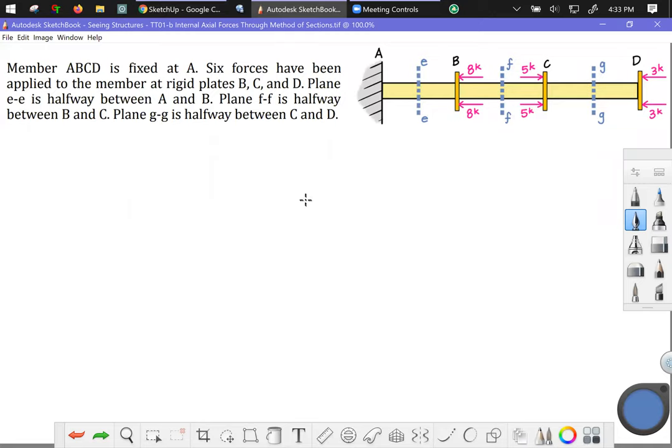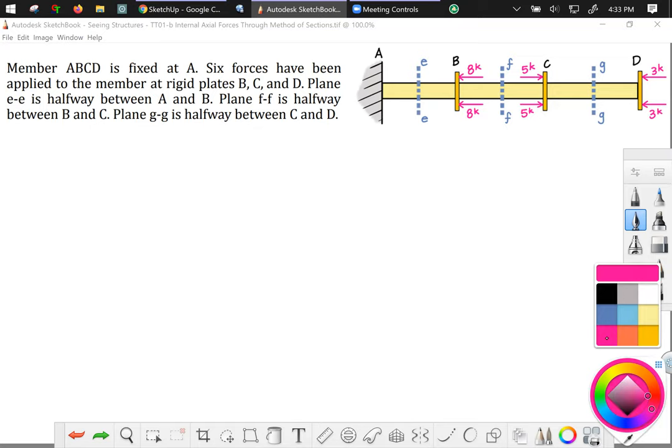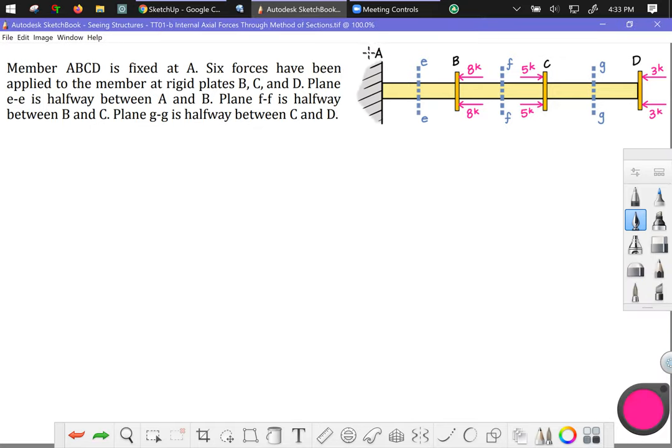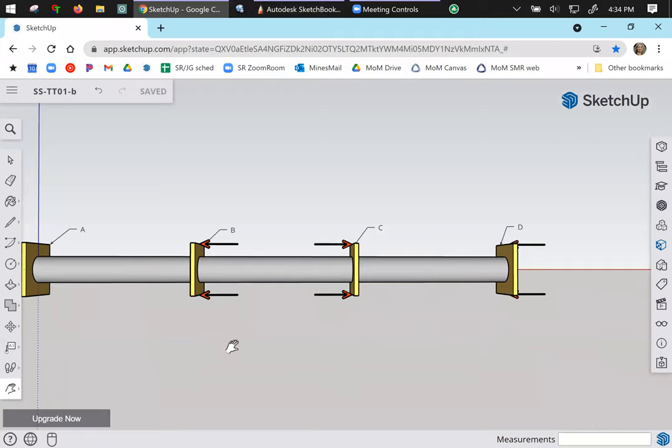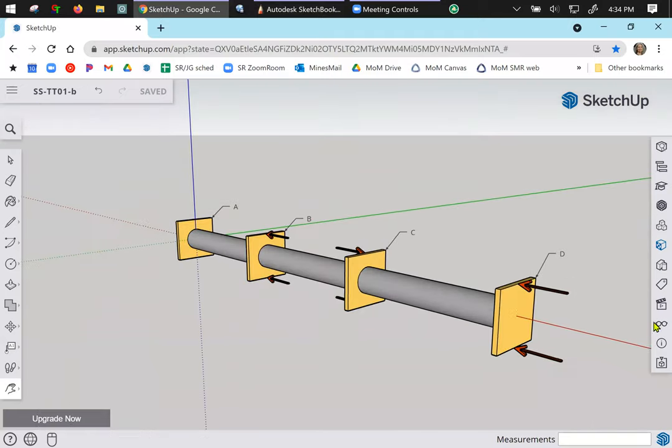The problem statement tells us that member ABCD is fixed at A. That's what this symbol means. It means translation and rotation are prohibited. So it is fixed. Therefore, it can develop translation reactions with respect to x and y, as well as rotation reactions. Six forces have been applied to the member at the rigid plates. So symmetric top, bottom, top, bottom, and top, bottom. And I think it's important to really make sure you understand in 3D what's going on. So we're just looking at a side view, something like this of this structure. And everything is nice and symmetric.